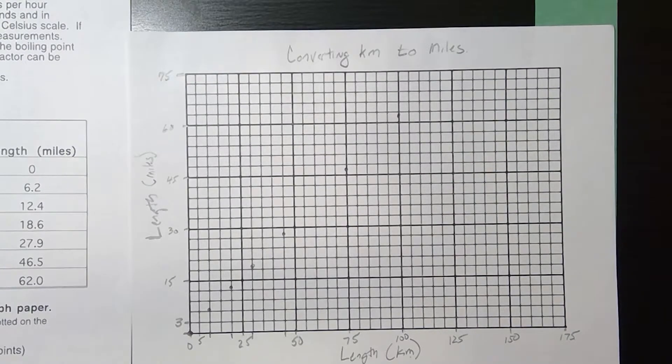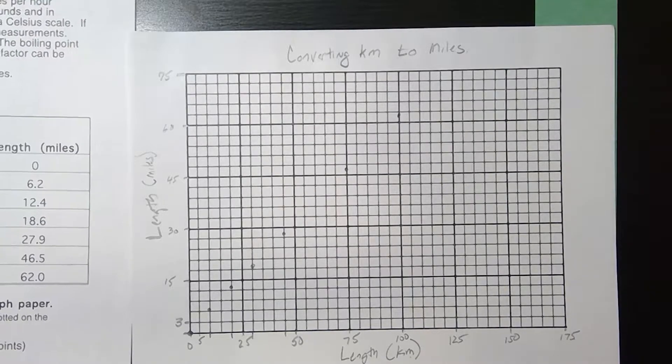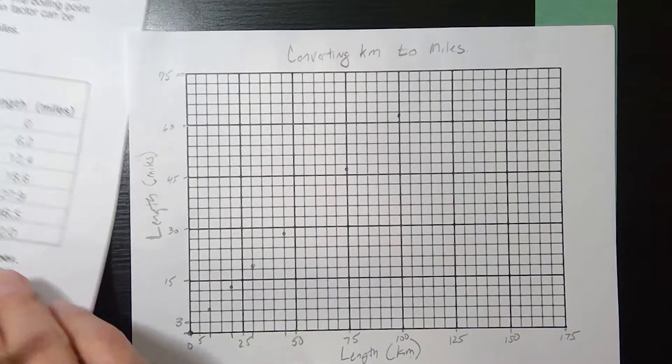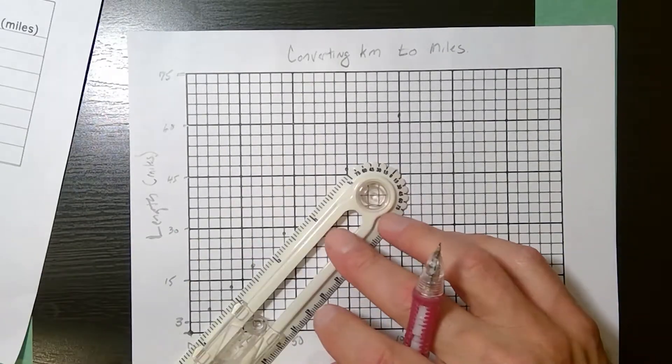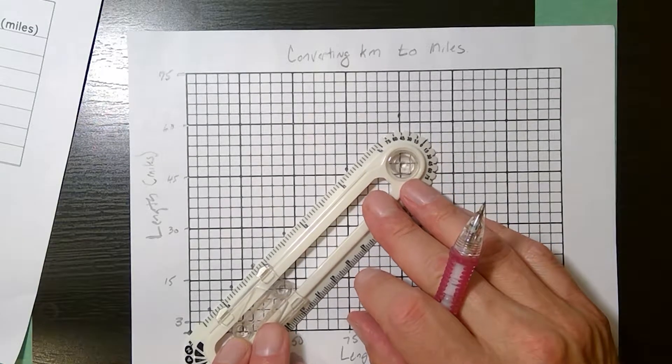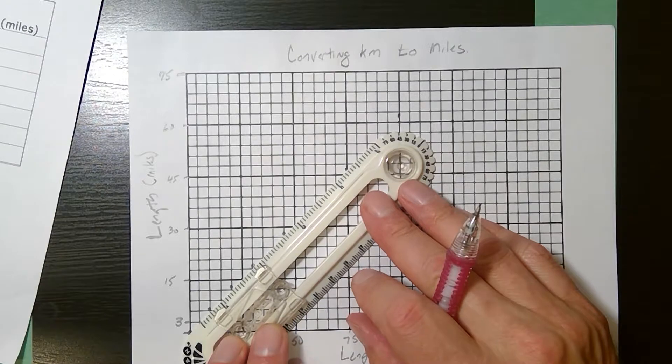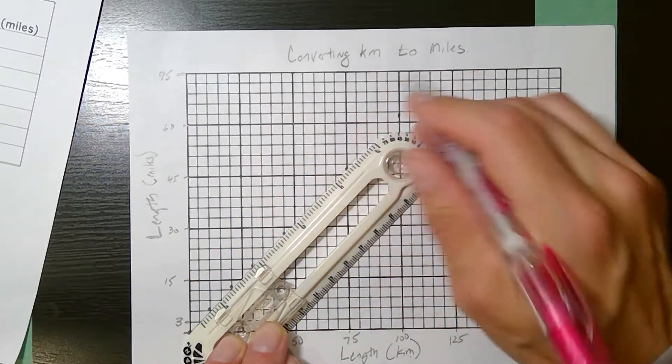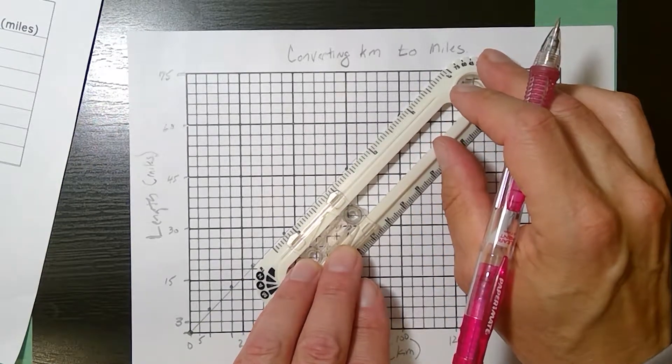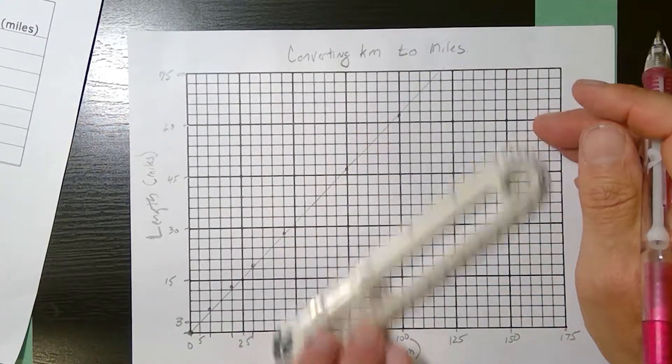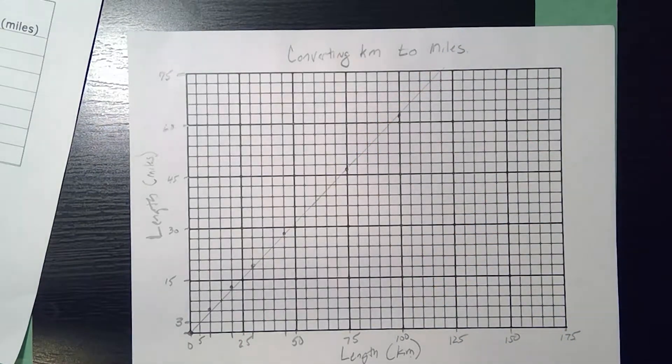Now we want a straight edge to connect those points. Now I only have this smaller ruler, but you'll see that these look like it's forming almost a nice perfect straight line. So because it's a linear graph, I'm connecting it with a line, and I can really extend it a little bit past. So there's my graph.